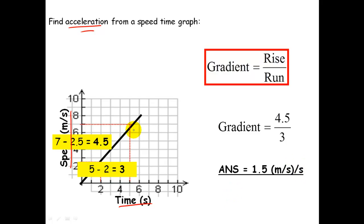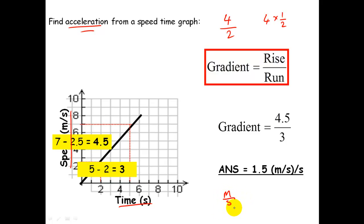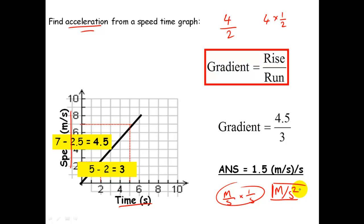The gradient was the same as the previous question, but this time the units are different. Metres per second divided by seconds is very messy, but we can think of it another way: dividing by seconds is the same as multiplying by 1 over s. So metres per second times 1 over s gives metres over seconds squared. The unit for acceleration is metres per second squared. You don't have to remember the full derivation, but you do need to remember that unit.